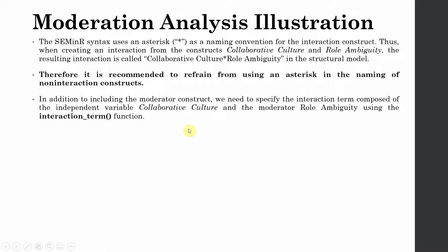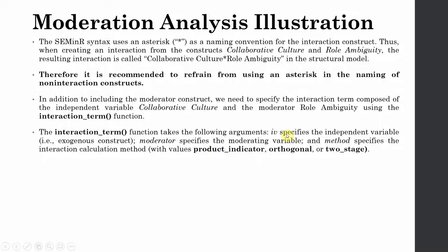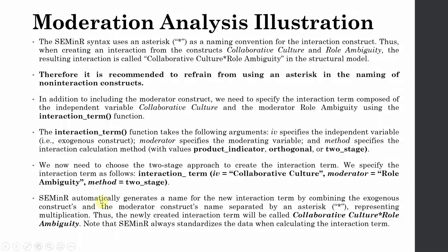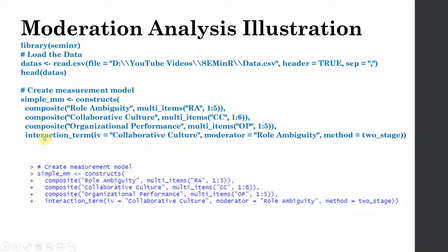The interaction function takes the following arguments: IV (your independent variable), your moderating variable, and the method to create the interaction — product indicator, orthogonal, or two-stage. In this case we are using two-stage. Let's go to R: here is my moderator, this is my IV, and this is my DV. You create the interaction term by naming your IV, naming your moderator, and specifying your method. Let's run it — no issues found.